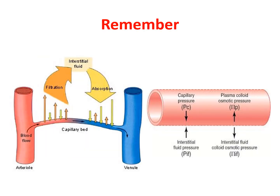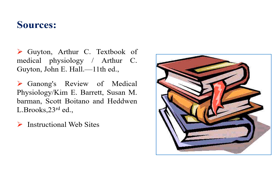To summarize, the Starling forces are very important to control and regulate bulk flow. The arterial side of the capillary bed is the filtering side, while the venous side is the absorbing side. Keeping in mind that 85% of what has been filtered is absorbed back, while the remaining 15% returns to the circulation through the lymphatic system. With this, we have finished today's session. Thank you.